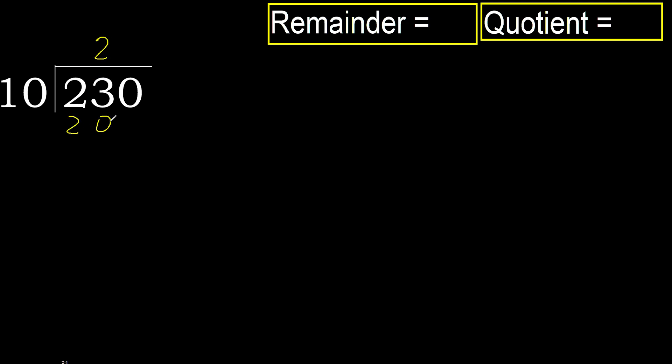20 is not greater. Subtract: 23 minus 20 equals 3. Next.